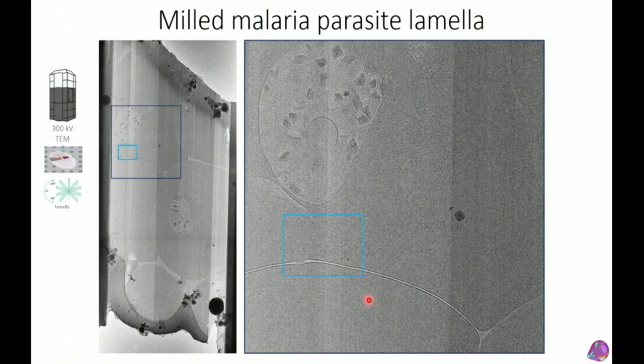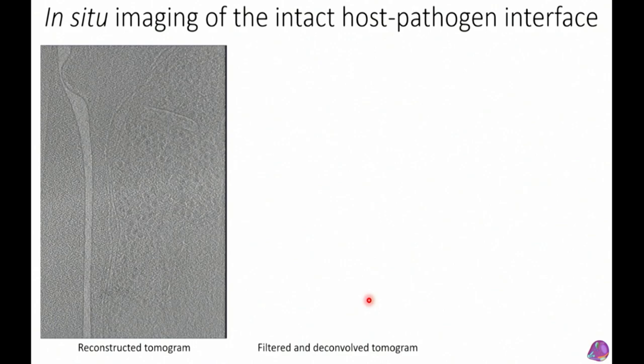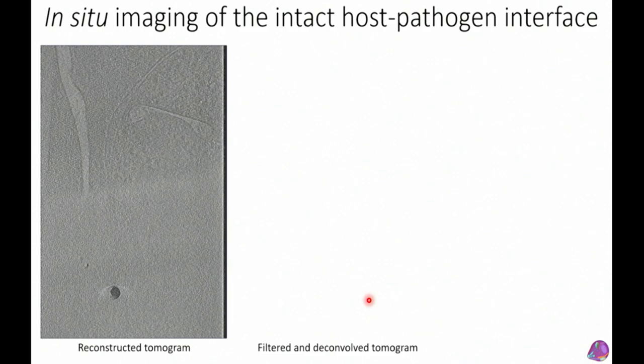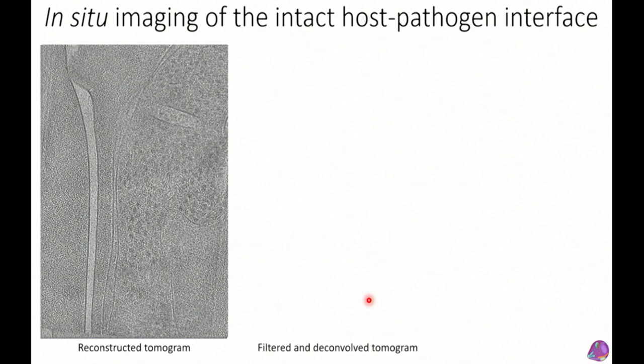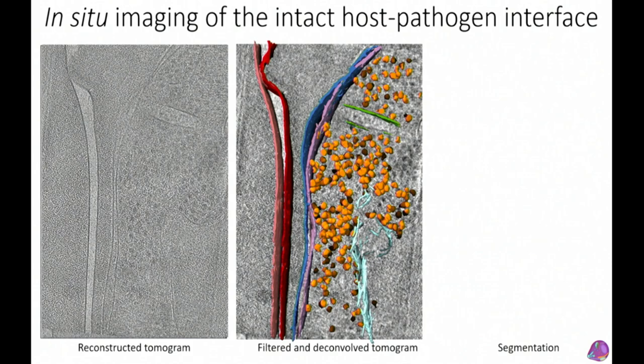To get to high resolution, we zoom in further to a 1.7 Å/pixel field of view for one tilt series, tilt from minus 60 to plus 60 degrees, and reconstruct a 3D tomogram — like Z-stacks in confocal microscopy. With much better detail, we can see the red cell membranes, knob, vacuolar membrane, parasite plasma membrane, and protein complexes. We then apply filtering and deconvolution, and train a neural network to segment all cellular and ultrastructural features.